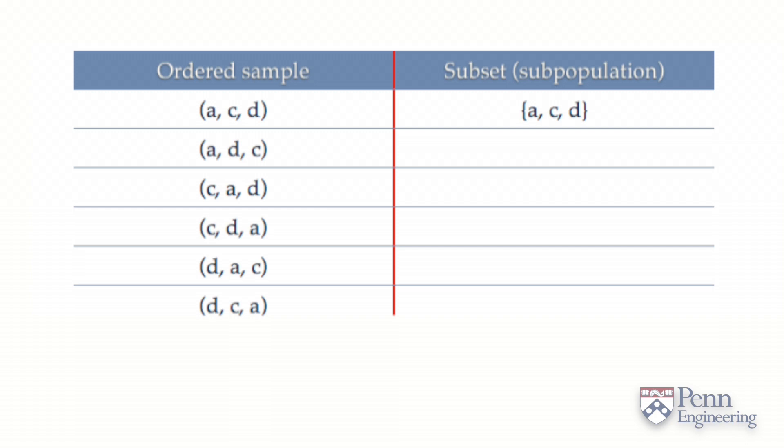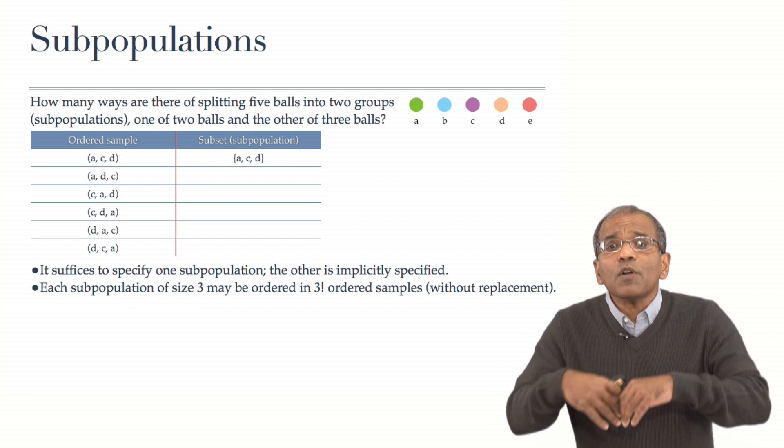At the high level, what we've got is one subpopulation of three elements to which we have six distinguished ordered samples. It is clear now that every subpopulation of three elements has a distinguished collection of six orderings in an ordered sample.